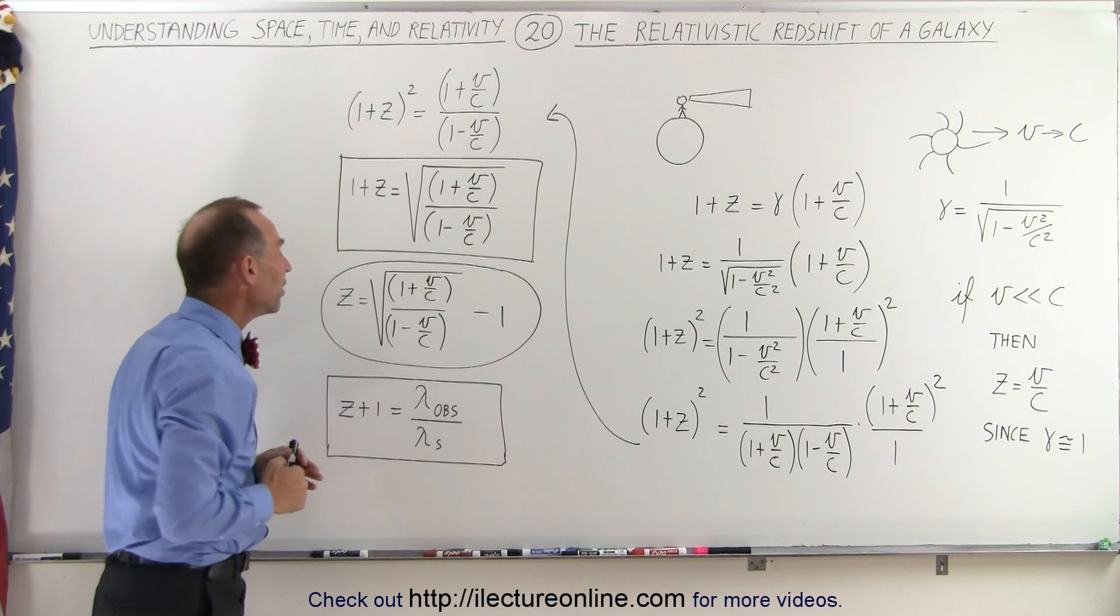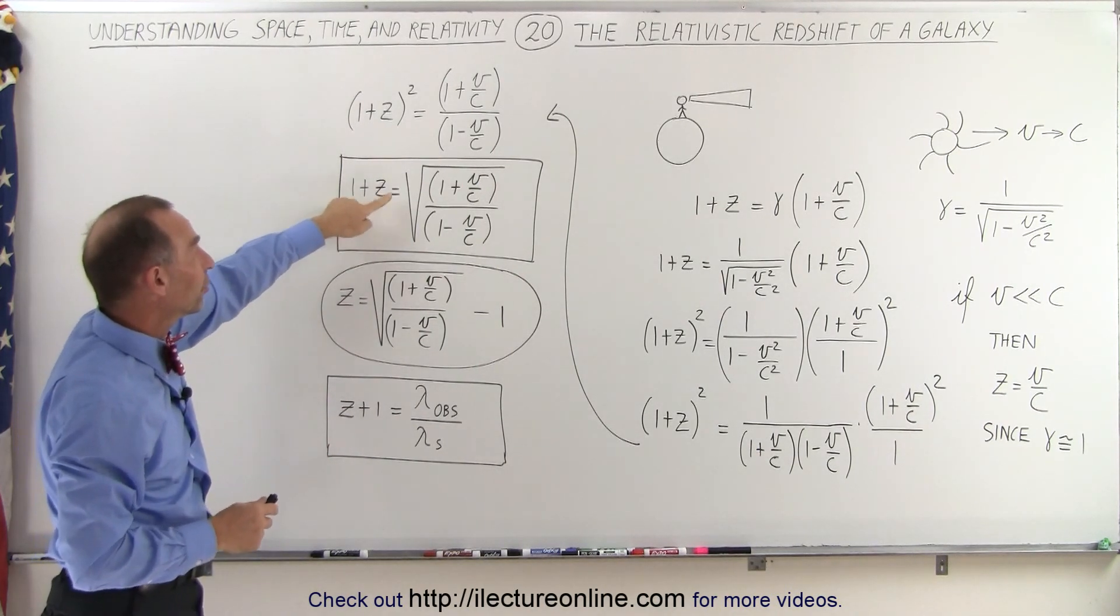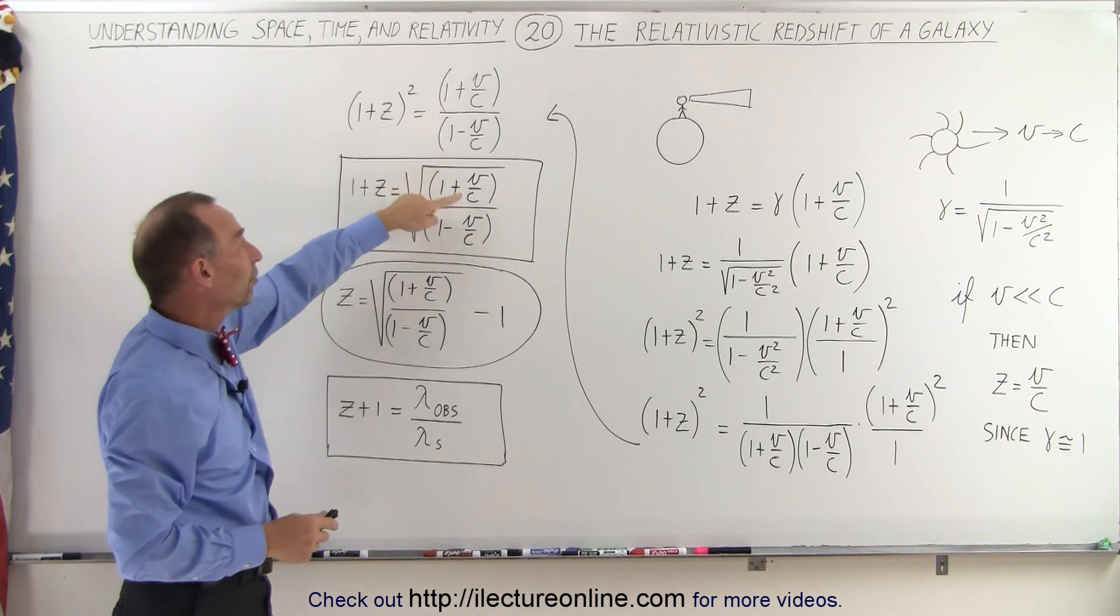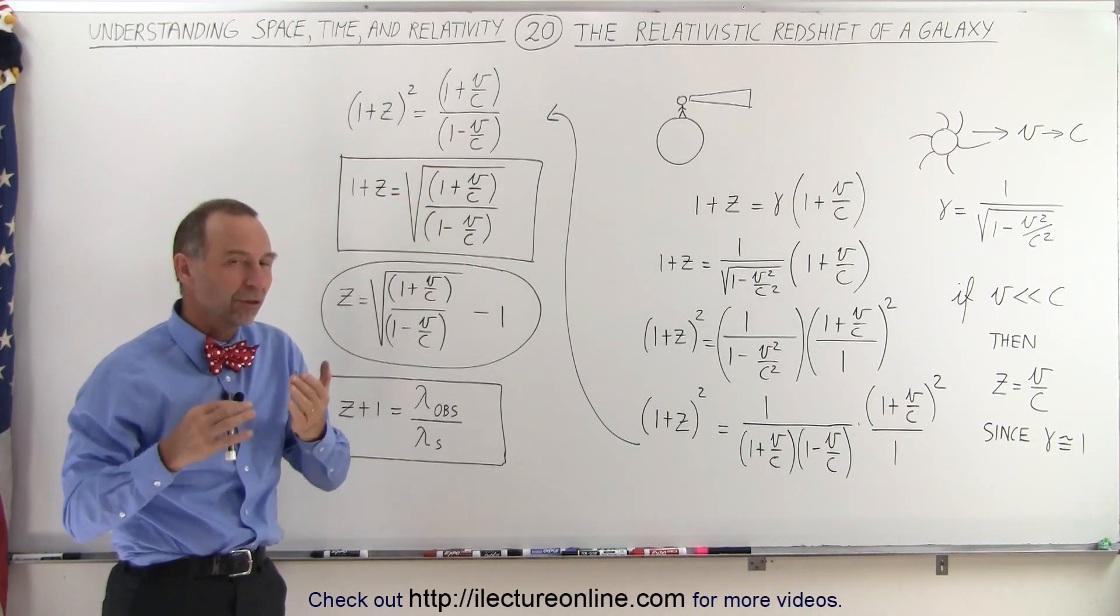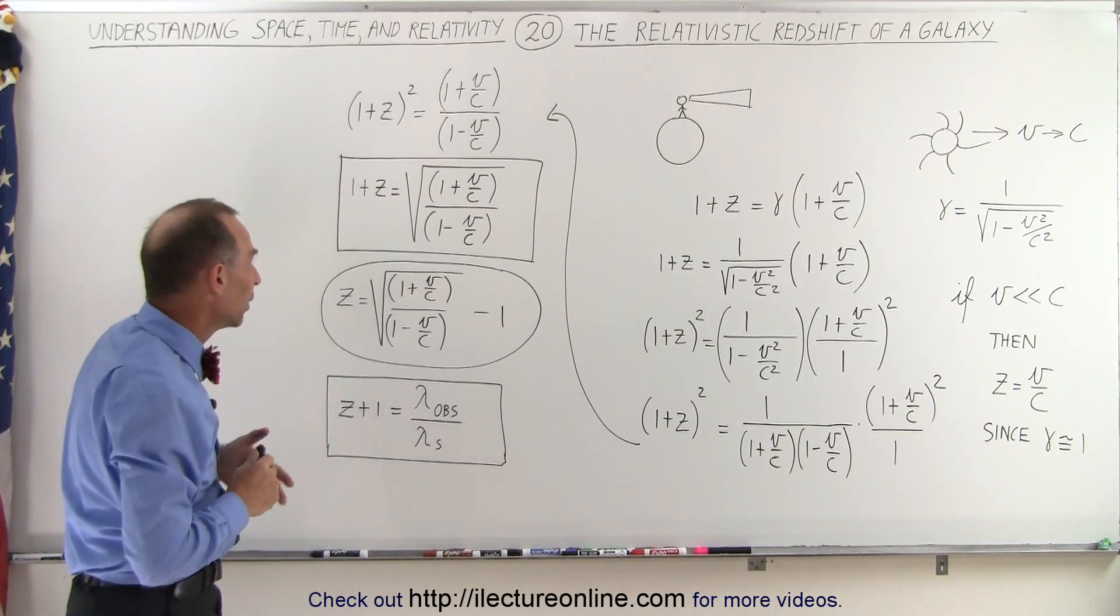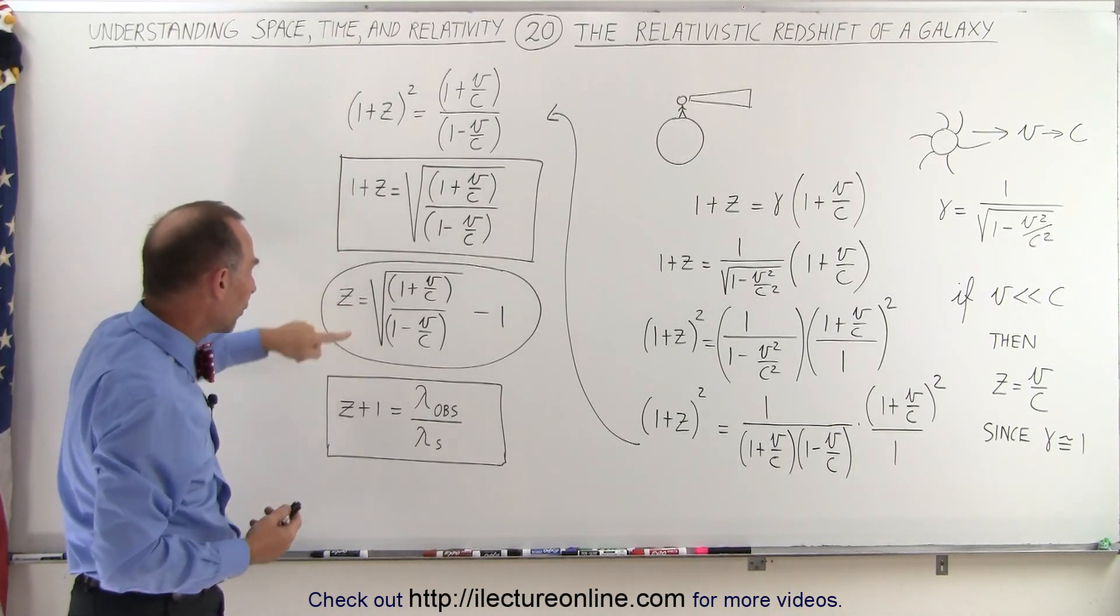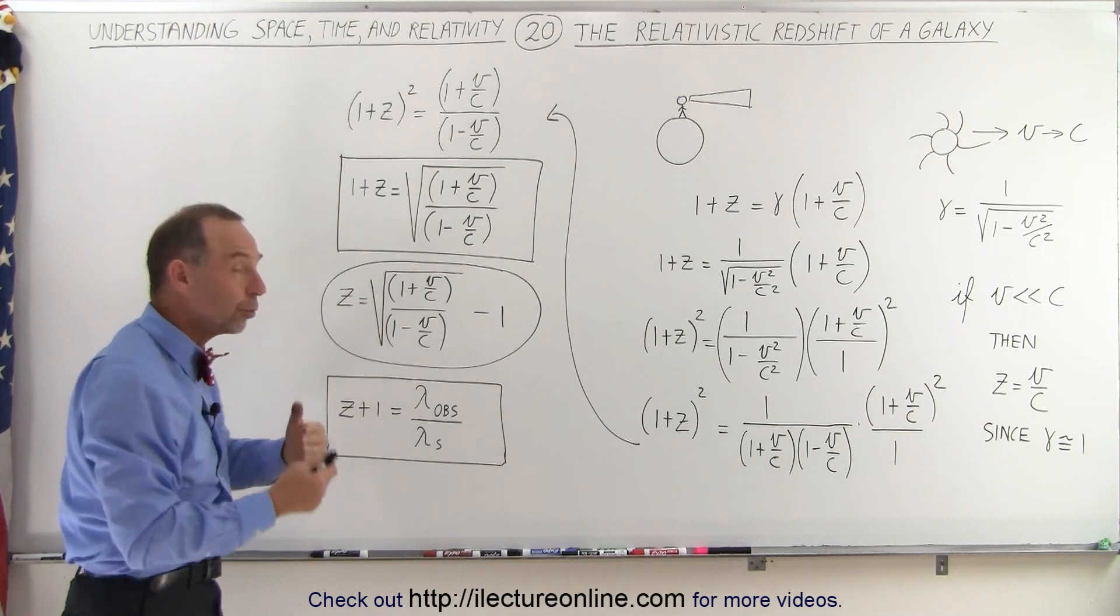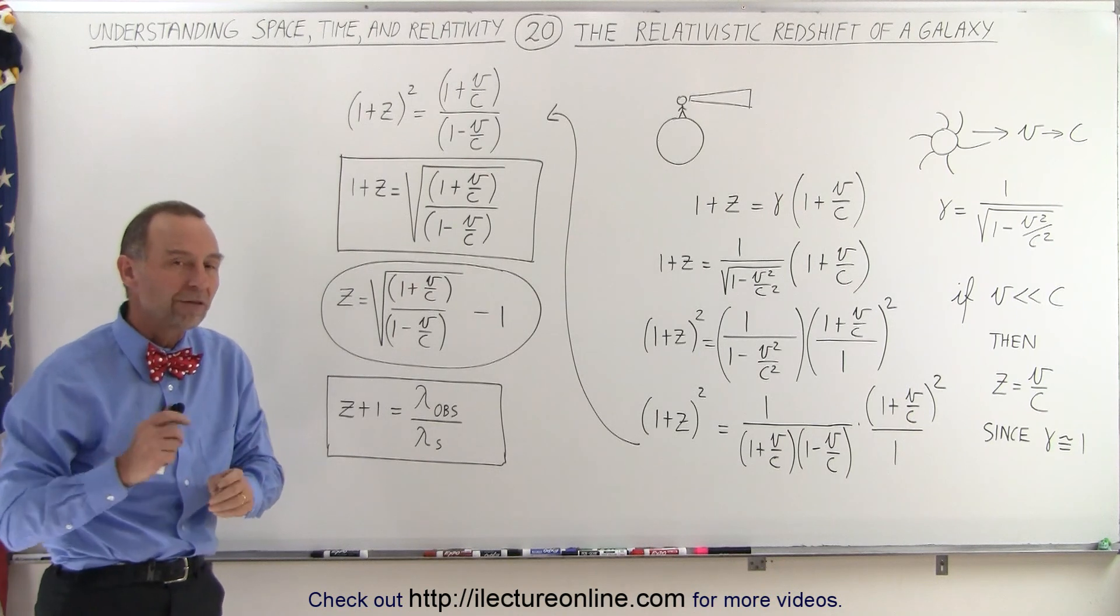Simplifying the equation, we get 1 + z equals the square root of (1 + v/c) divided by (1 - v/c). It becomes a little more complicated. You can isolate z if needed, or write z + 1 as the ratio of the observed wavelength to the source wavelength.